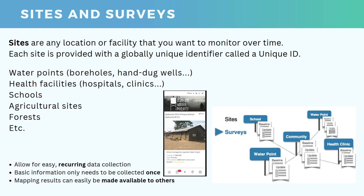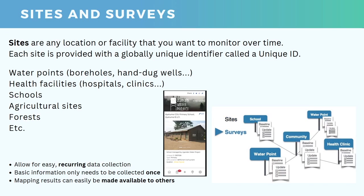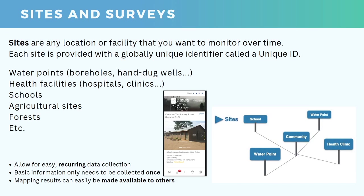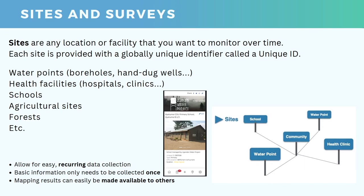We strongly recommend using sites and then linking surveys to them to allow for easy recurring data collection. Sites also mean that you only need to collect basic information — such as a name, a location, and a photo — only once. You don't need to do that every time you visit the location.